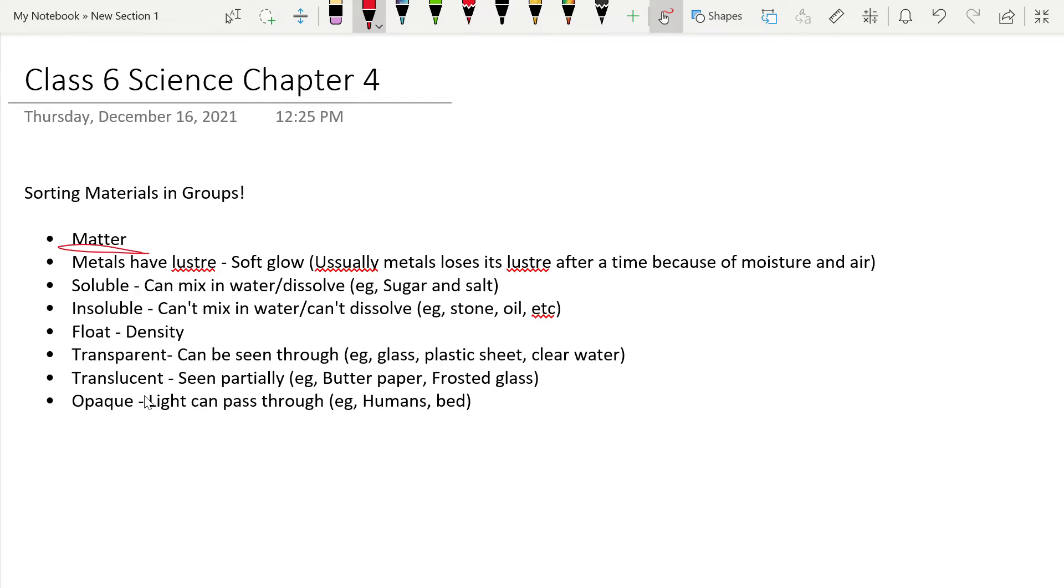Opaque is that light can't pass through, for example human or bench.